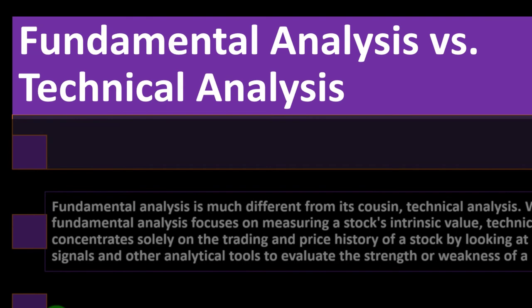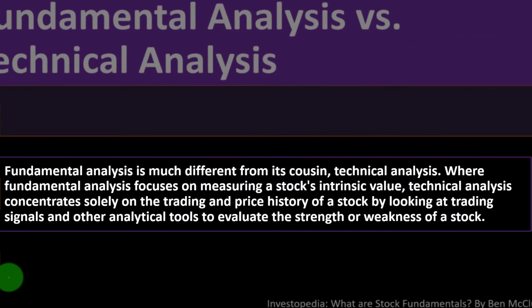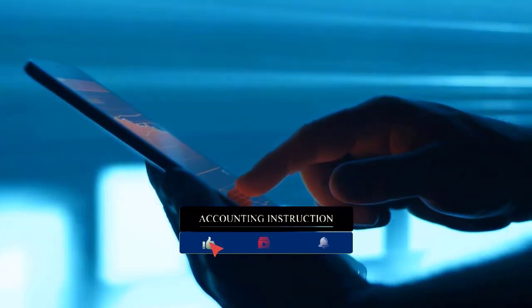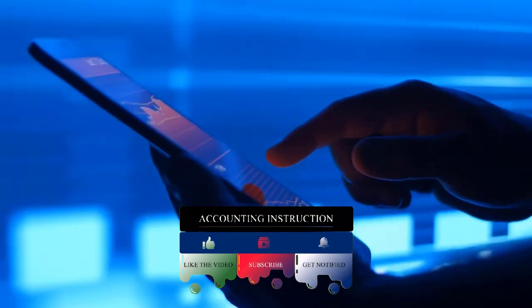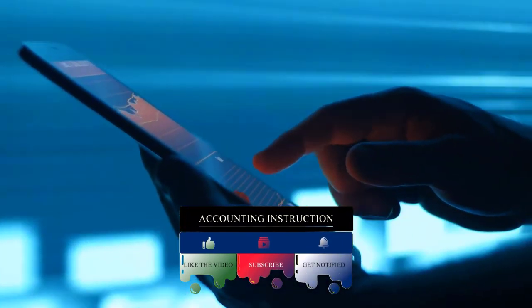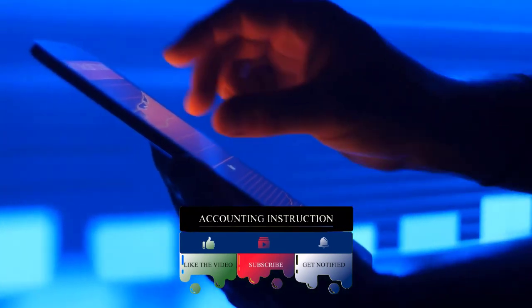Fundamental analysis versus technical analysis. Fundamental analysis is much different from its cousin technical analysis, where fundamental analysis focuses on measuring a stock's intrinsic value. Technical analysis concentrates solely on the trading and price history of a stock by looking at trading signals and other analytical tools to evaluate the strength or weakness of a stock. You can look at the past performance in terms of trends on the trading. Note that if you're doing the trends on the trading, those are trends that you can look at and try to guess what's going to happen in the future. But you're not really looking at the fundamentals to drive that decision.